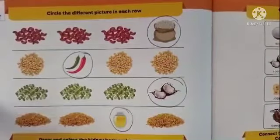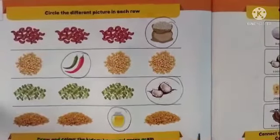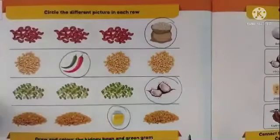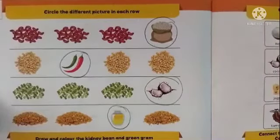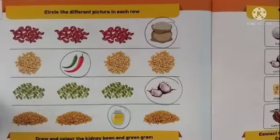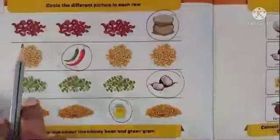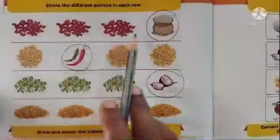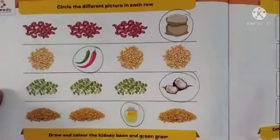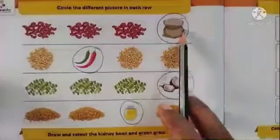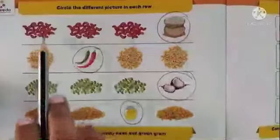After that, we have a few activities in page number eight — to circle the different pictures in each row. In the first row we have three pictures of kidney beans and a bag of barley. The three kidney bean pictures are the same, so we have to circle the barley.